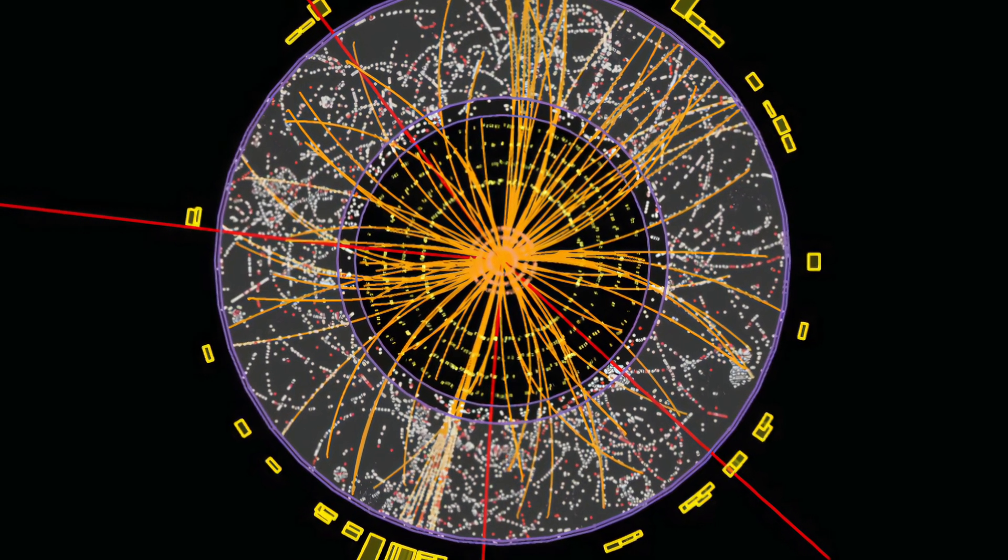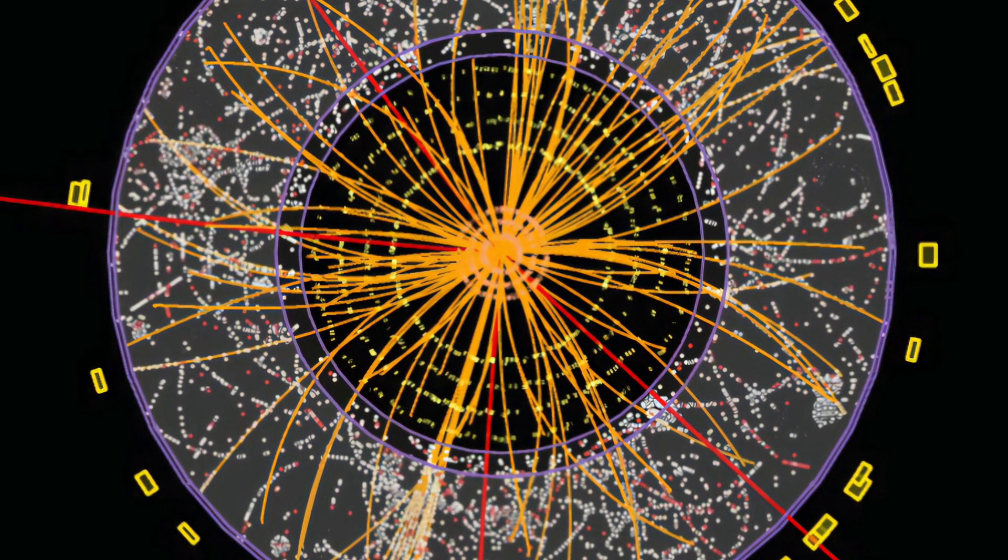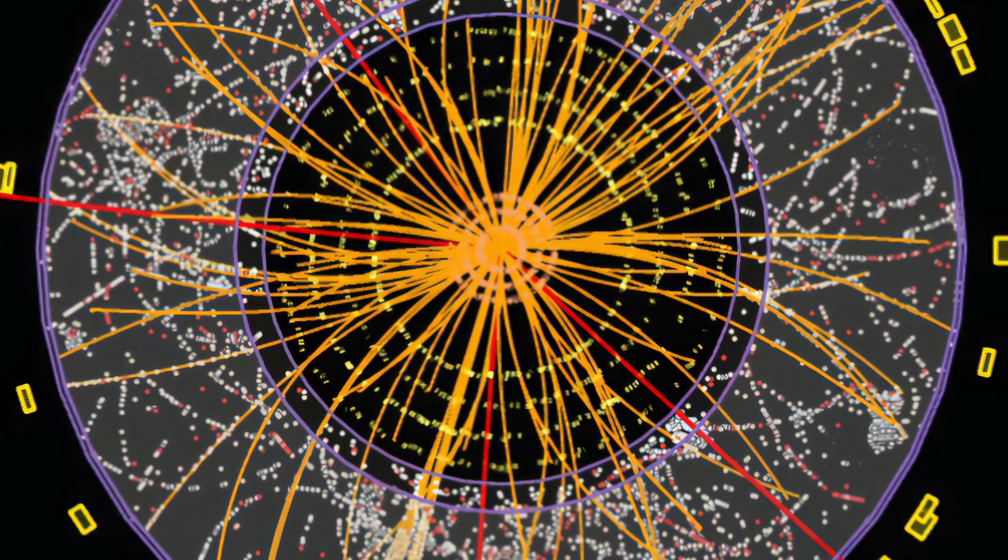Did you know that every minute more than 10,000 muons pass through our bodies produced by cosmic rays? Hello, and welcome to Hard Science Explained, where we decode fascinating topics in science.